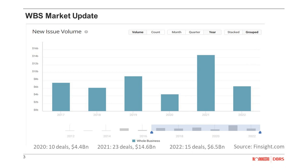Now is a good time to give some market color and issuance trends. A lot of the data shown is from Finsight. New issue volume was actually down about 55 percent in 2022 from record levels the prior year. 2022 ended with approximately six and a half billion of issuance compared to 14.6 billion total issuance for the full year of 2021, which represented record levels.